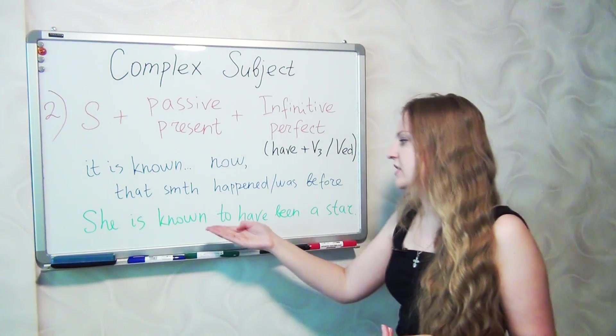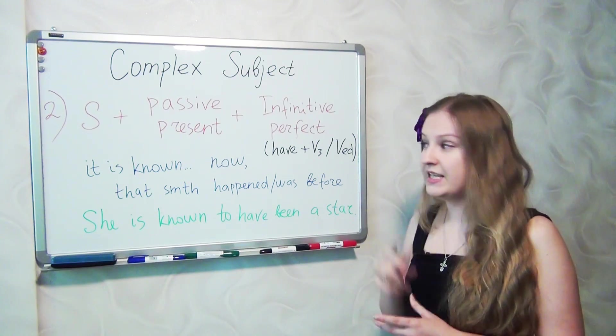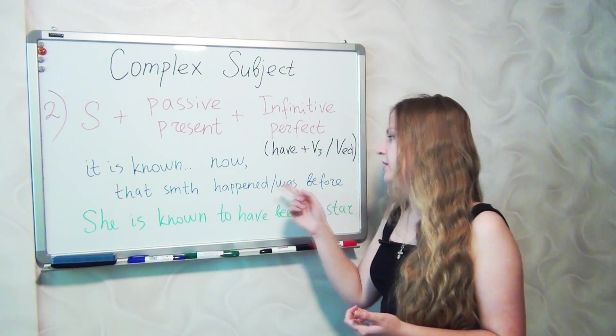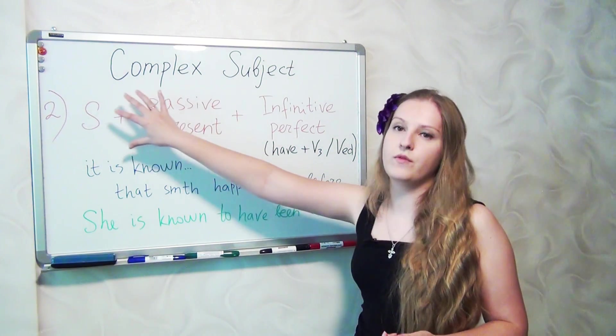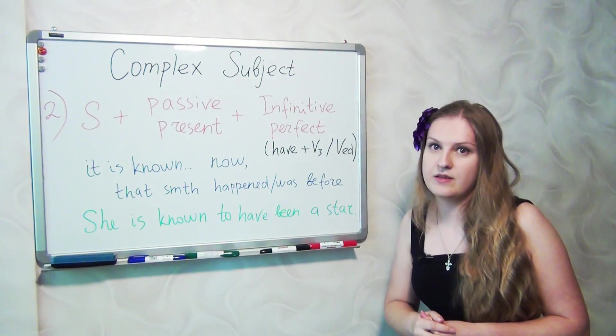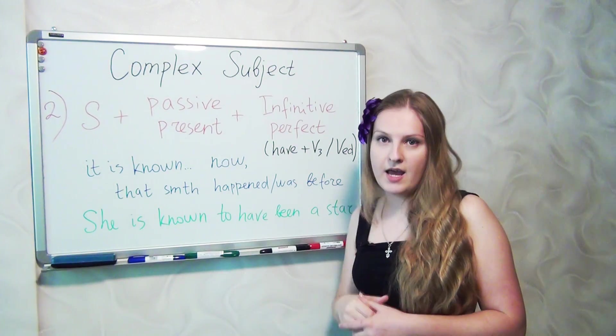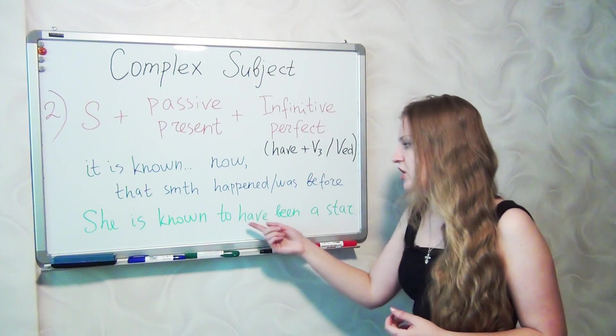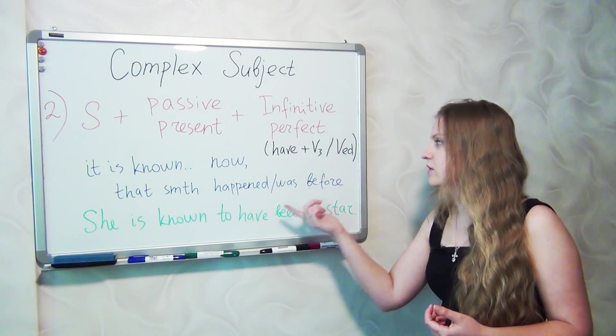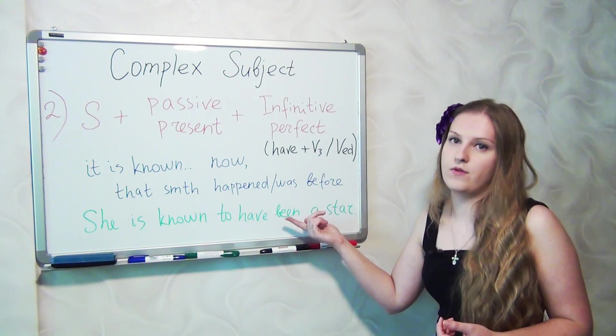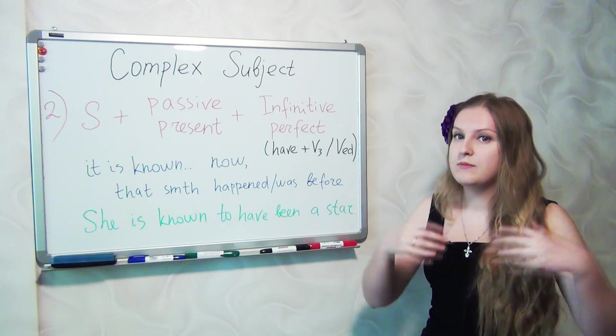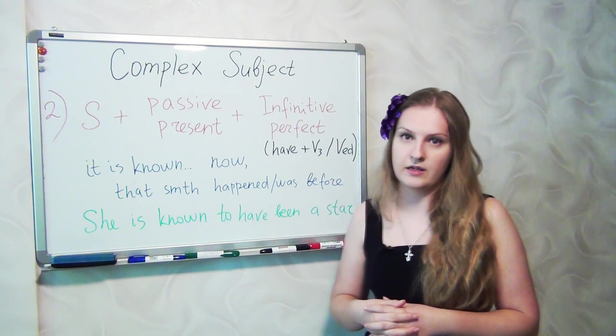For example, she is known to have been a star. Here it is known, said, believed now that something happened or was before. So the first part of the sentence is connected with present, but the second one is connected with the past. So here she is known now, so now people know that she was a star. So to have been a star. Here we use a perfect infinitive, have plus the third form of the verb to be. So that's why she is known to have been a star means that people know now that she was a star before.